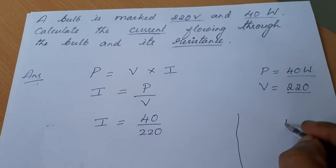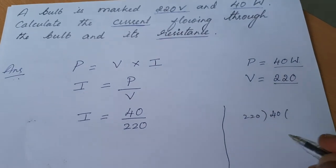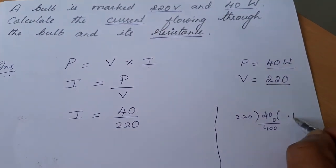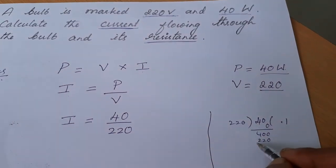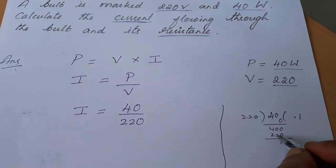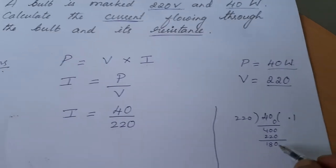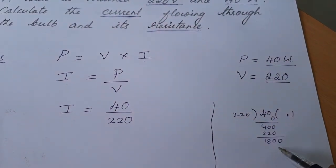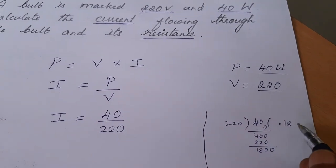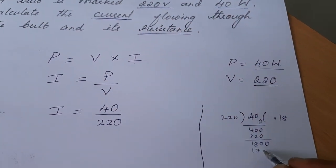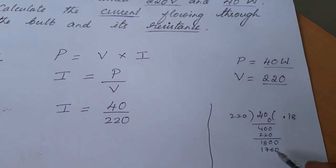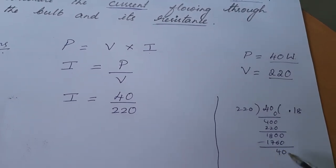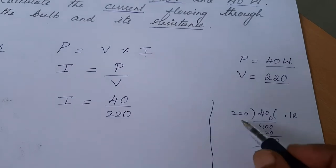When we divide 40 by 220, we will get point... I will add 10, it becomes 400. 220 will go one time. I will get 180. If I put one more 0, 220 will go around 8 times. 8 times 220 is 1760. If I minus this I will get 40.